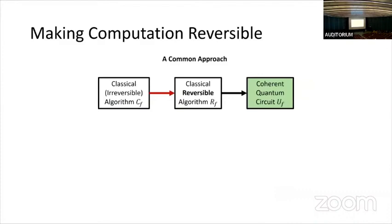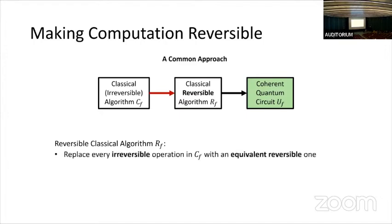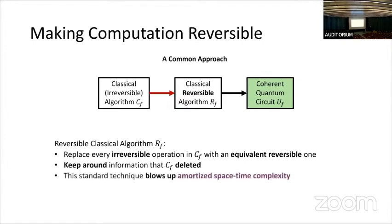So how do we usually get around this? The standard technique is to start with an efficient classical algorithm for computing the function f, and then design a reversible classical algorithm by replacing every irreversible operation with an equivalent reversible one — essentially keeping around all the information that we would have deleted. This does work and maintains the time complexity of the original algorithm, but the problem is that it blows up our space usage and thus our amortized space-time complexity.